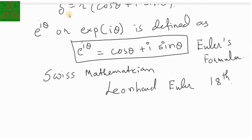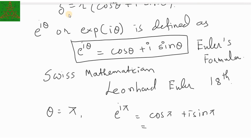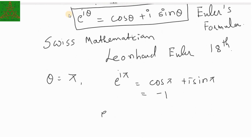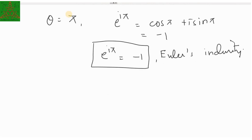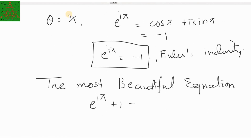In particular, if I take θ equal to π, then this will be e raised to iπ equal to cos π plus i sine π, and that will give you minus 1, because cos π will be minus 1 and sine π will be 0. This formula is known as Euler's identity, and this identity is actually a very beautiful result in mathematics.